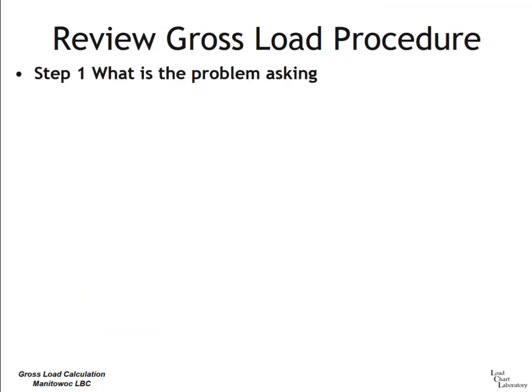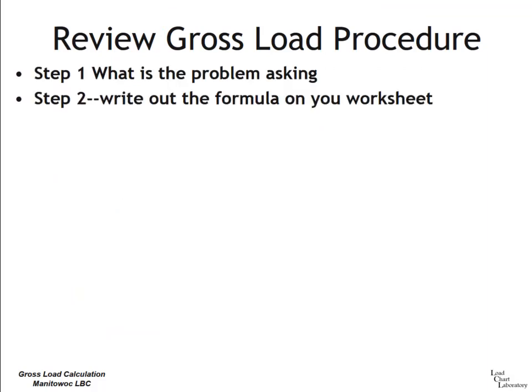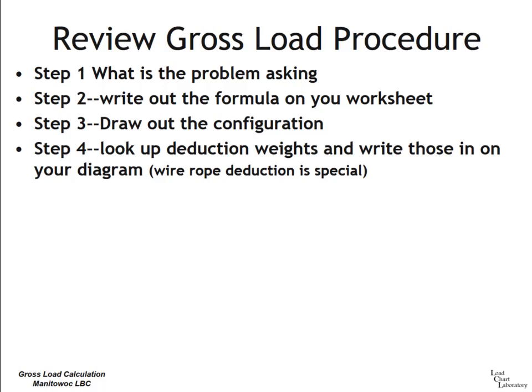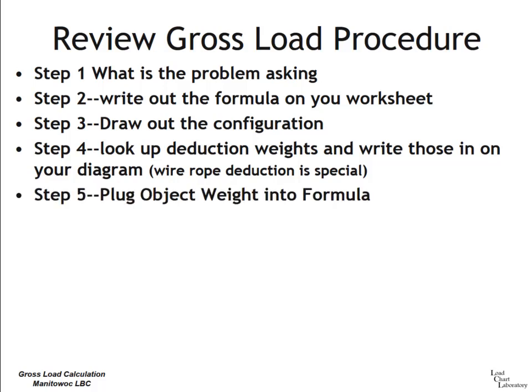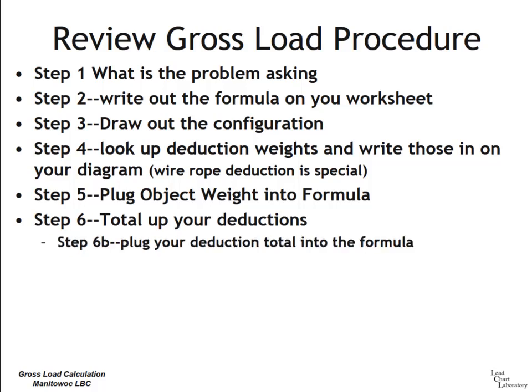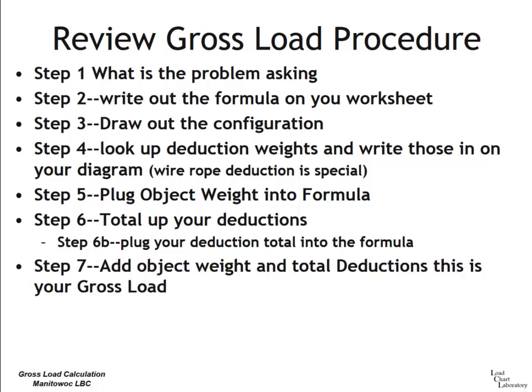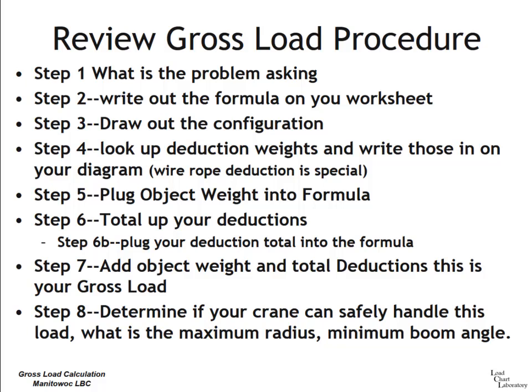Let's review the eight steps. Step one: identify what the problem is asking for. Step two: write out the formula on your worksheet. Step three: draw out your configuration. Step four: look up deduction weights and write them on your diagram. Wire rope deduction must be calculated — we'll cover that next. Step five: plug in the object weight. Step six: total up your deductions and plug the total into the formula. Step seven: add object weight and total deductions to get gross load. Step eight: determine if your crane can safely handle the load, including maximum radius and minimum boom angle.